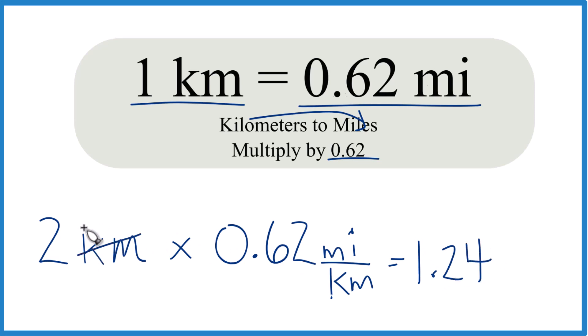And we have kilometers on the top and here on the bottom. They cancel out. We have our miles there. That's our answer. So when we convert 2 kilometers to miles, we end up with 1.24 miles.